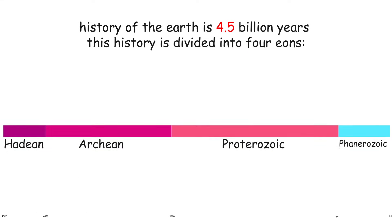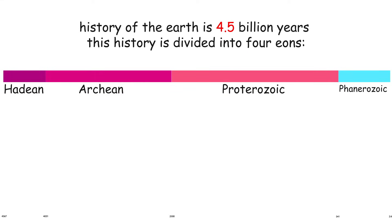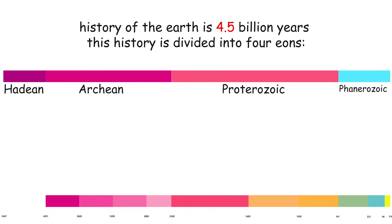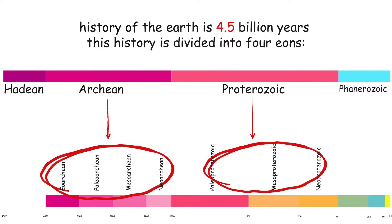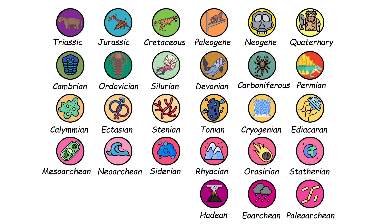These four eons are further subdivided into ten eras: Eoarchian, Paleoarchian, Mesoarchian, Neoarchian, Paleoproterozoic, Mesoproterozoic, Neoproterozoic, Paleozoic, Mesozoic, and Cenozoic. Each era is divided into periods.